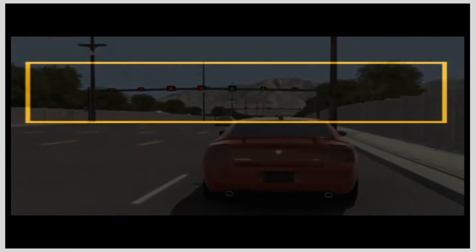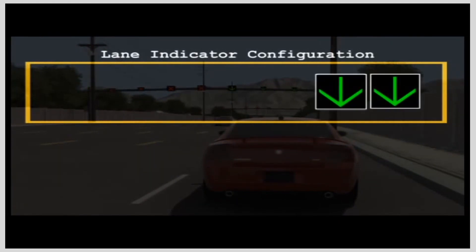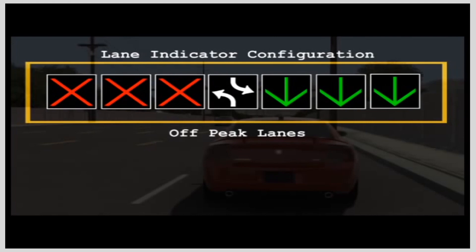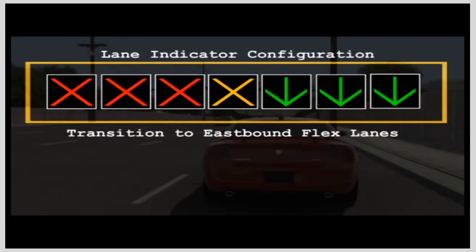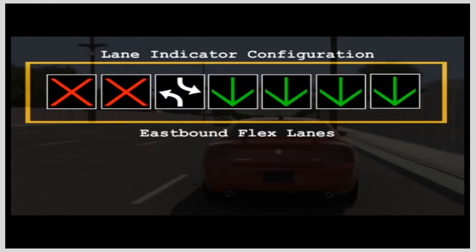The first configuration shown is for off-peak traffic hours. Three green arrows show which lanes are for eastbound motorists, white arrows indicate the center two-way left turn lane, and three red X's mark lanes with opposing traffic. The yellow X indicates a lane in transition from a traditional configuration to flex lanes — a red X will follow, indicating motorists should no longer be in that lane. During morning peak hours, four lanes are open to eastbound traffic and the center turn lane moves over one lane to the left to improve traffic flow.